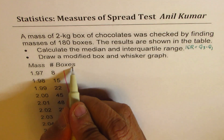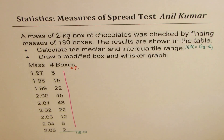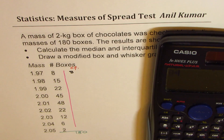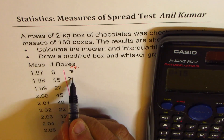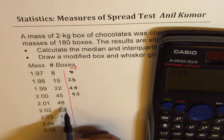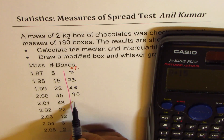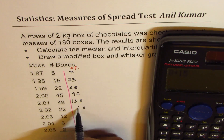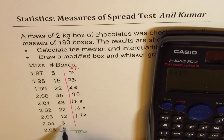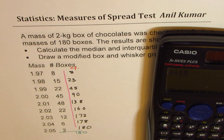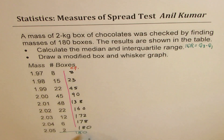Since we have 180 boxes, the first step is to add up the frequencies and make a column for cumulative frequency. Adding the values one by one: 8, then 8+15=23, then 23+22=45, then 45+45=90, then 90+48=138, then 138+22=160, then 160+12=172, then 172+6=178, and finally 178+2=180. So we indeed have 180 boxes, giving us the cumulative frequency.